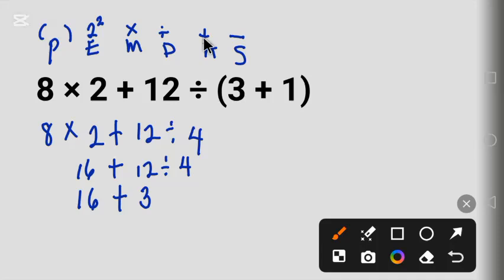And we evaluate from left to right. In this case we have addition from the left, addition is the first, so we will add 16 and 3, and that will give us 19. This is the correct answer.